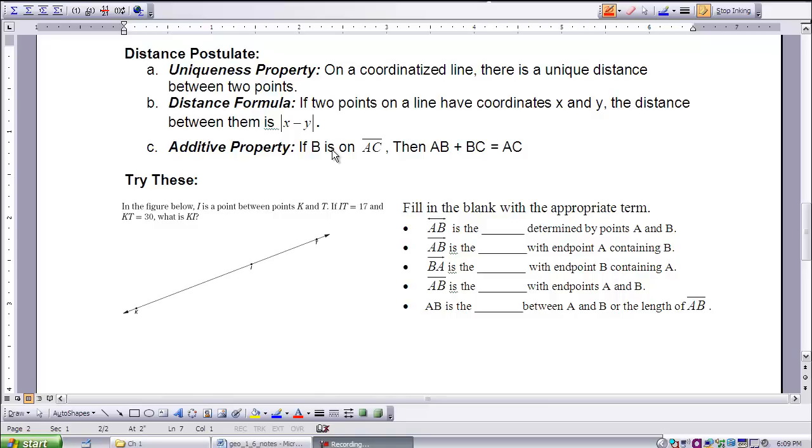Because, if you think about it, here's my segment AC. A has to be an endpoint, and C has to be an endpoint. So that means that B has to be in between. So if I take my distance from here to here, and add it with my distance from here to here, that will give me my total A to C.